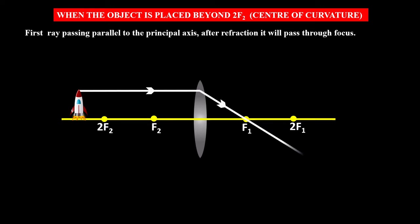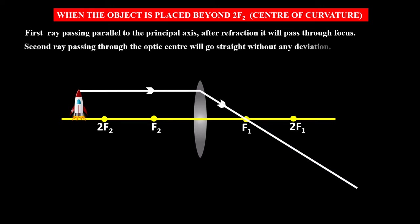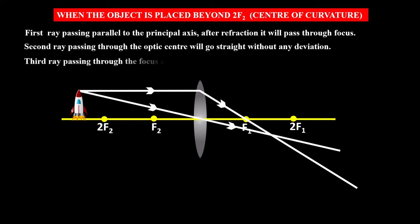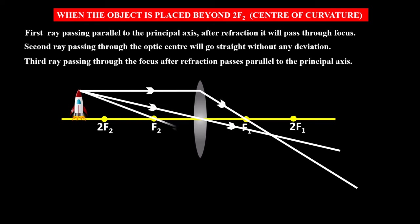The second ray passing through the optic center goes straight without any deviation. The third ray passing through the focus, after refraction, passes parallel to the principal axis. These three rays meet at one point where we can see the image of the object.